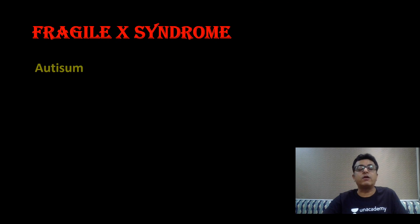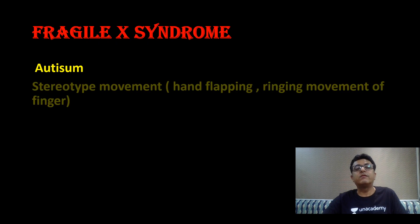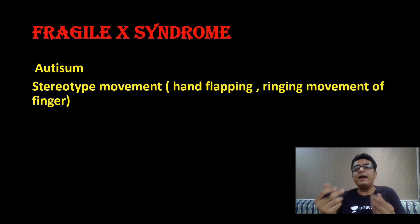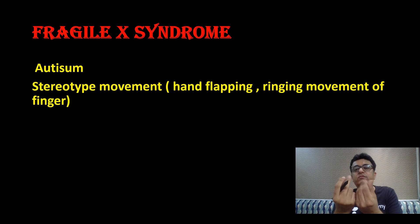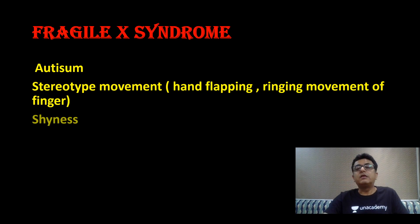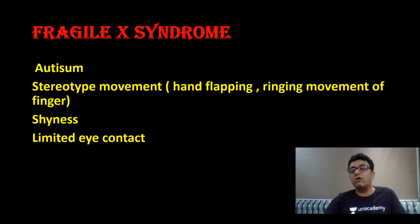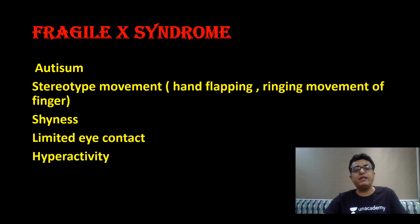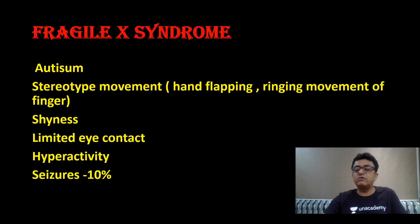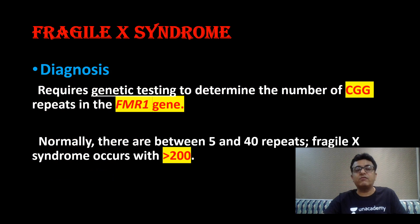Neurological features: they are autistic children — autism is present. They have stereotyped movements: hand flapping and ringing movements of the fingers. They show shyness and limited eye contact because they are autistic. Hyperactivity is present. Seizures occur in 10% of patients.